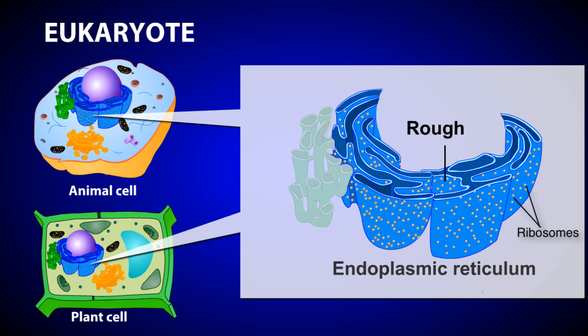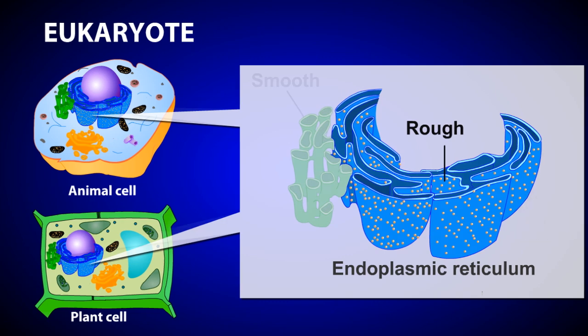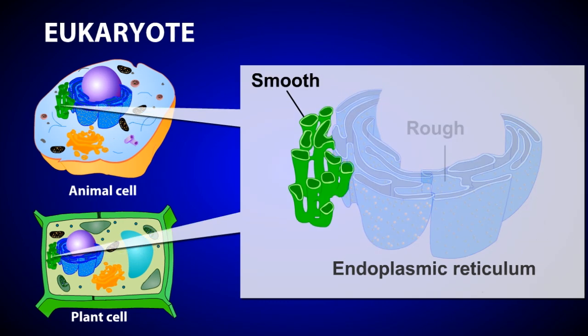The proteins produced by the rough ER are often secreted by the cell and carried by vesicles to the Golgi apparatus for further modification. The smooth ER is a membrane-bound organelle involved in lipid synthesis, detoxification, and carbohydrate metabolism. It is given the name smooth endoplasmic reticulum because there are no ribosomes on its cytoplasmic surface.